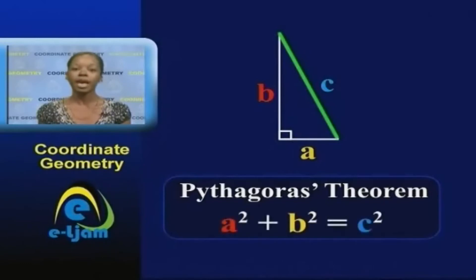So in a triangle whose hypotenuse is C, the square of A plus the square of B is equal to the square of C.